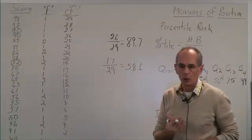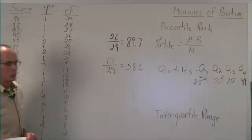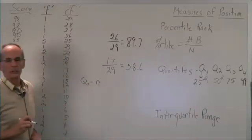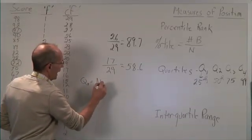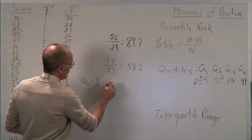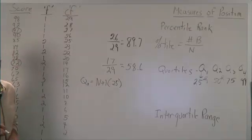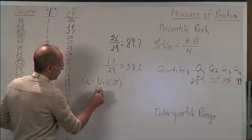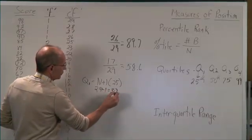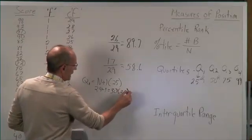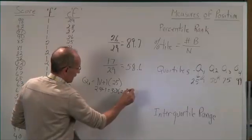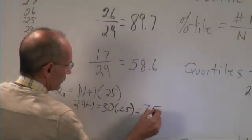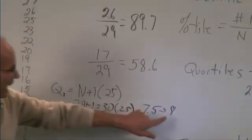To determine a quartile, we use a different formula. To find the first quartile, take the number of scores N, add 1, and multiply by 0.25. In this case, our number of scores is 29. We add 1 to get 30, then multiply by 0.25, which gives us 7.5. We always round up, so we round to 8. This means the first quartile is the 8th score from the bottom.